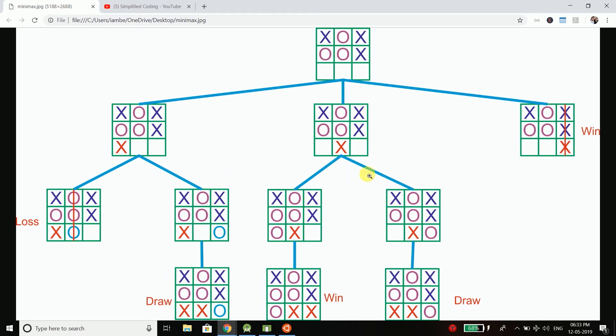Now the second possibility is we will place the move here. Now if we will place the move here game can go ahead and again we have two possibilities. The first possibility is player can make the move here and if we go to this possibility we are coming to a win because then we will place the move here and it is a win for the computer. But if player will place the move here then it is a draw in the next level. So this move is also going to a win or a draw. So this is also not the best case to go.